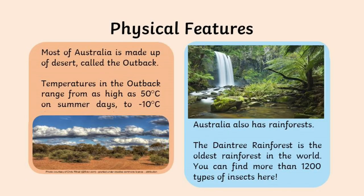This may take you back to your geography lessons on physical features of the landscape — things that are already there, made by nature, not created by man. Let's look at some of Australia's famous physical features. Most of Australia is made up of desert called the outback, where temperatures can be extreme — reaching 50 degrees Celsius in summer days and dropping to minus 10 degrees during winter nights.